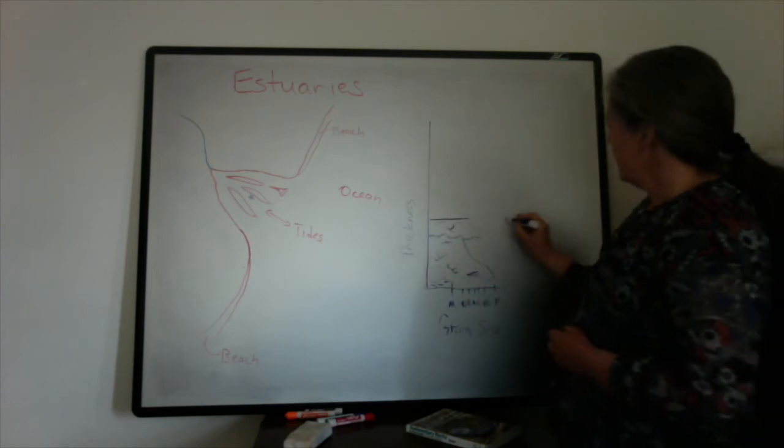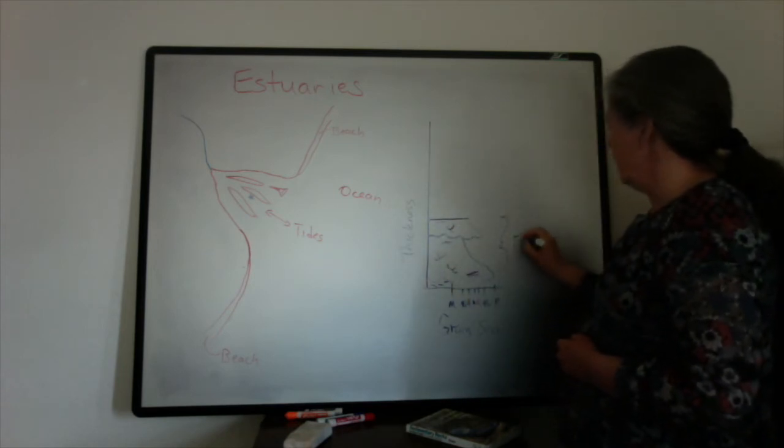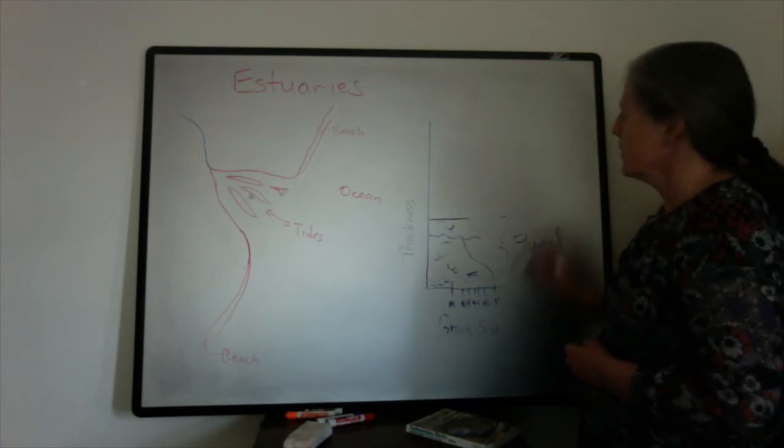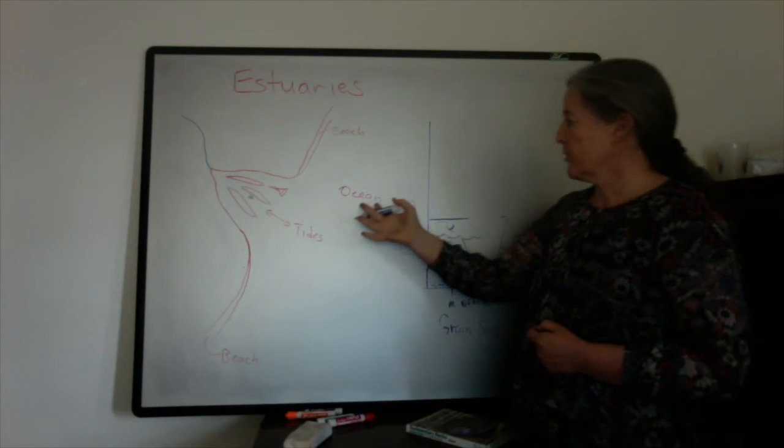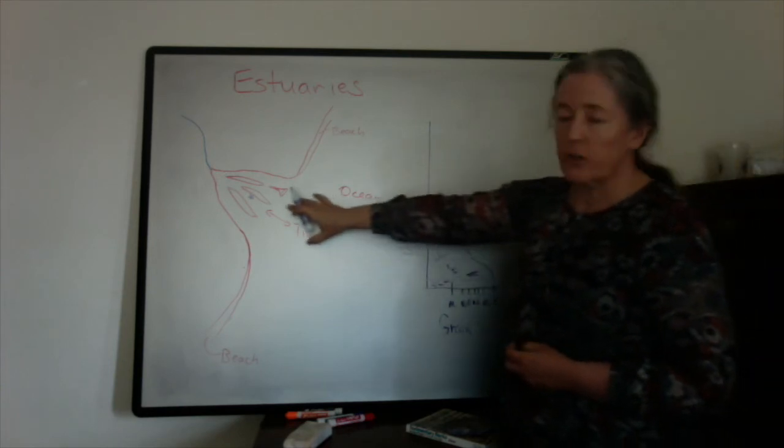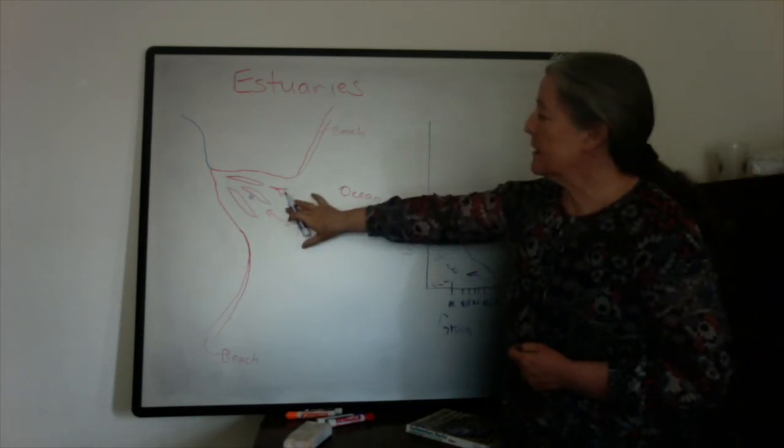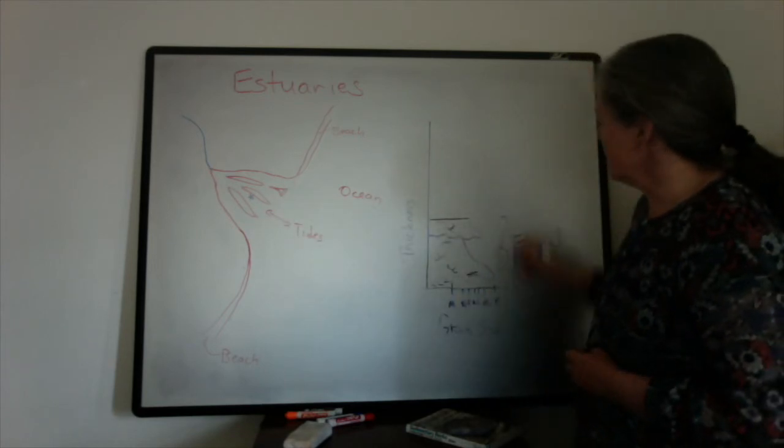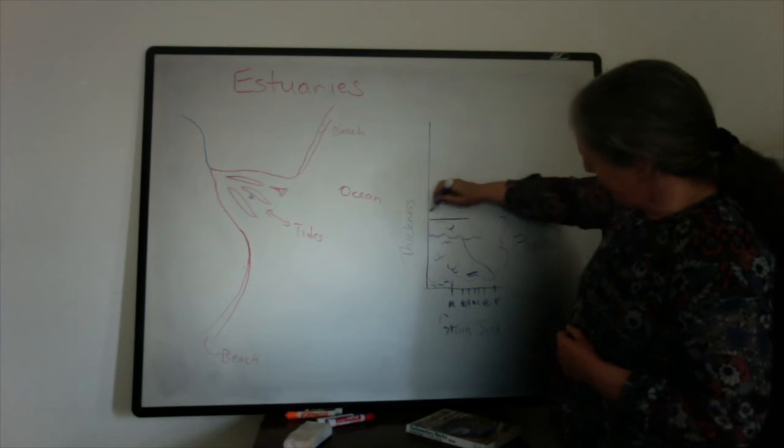So these represent the fluvial deposits. When the ocean starts going up, you start to see the evidence of tides. I drew this as a tidally influenced estuary here.